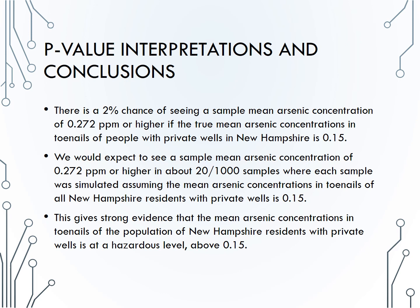Another way of stating that same p-value interpretation: we would expect to see a sample mean arsenic concentration of 0.272 parts per million or higher in about 20 of 1,000 samples, where each sample was simulated assuming the mean arsenic concentration of toenails of all New Hampshire residents with private wells is 0.15. As a conclusion, we need to give our strength of evidence and write the conclusion in terms of the alternative hypothesis. We have strong evidence that the mean arsenic concentration in toenails of the population of New Hampshire residents with private wells is at a hazardous level above 0.15. Thank you.